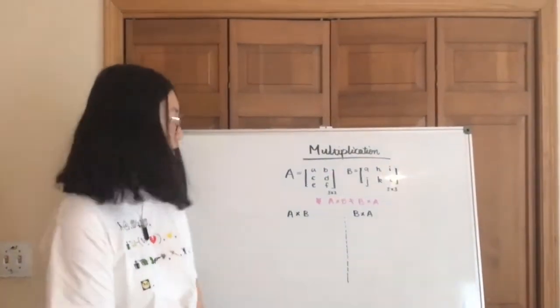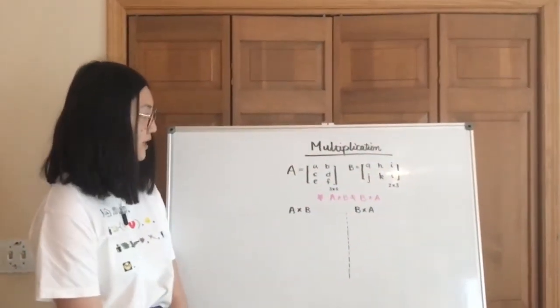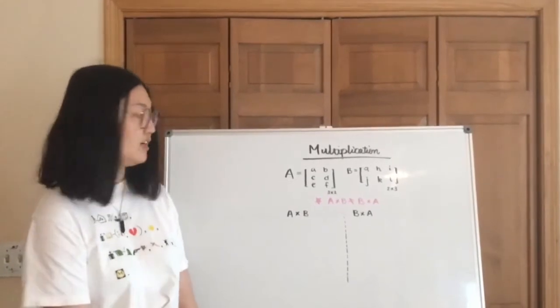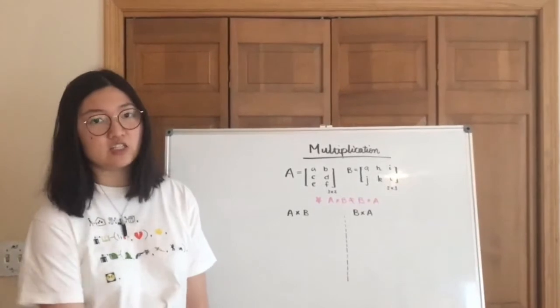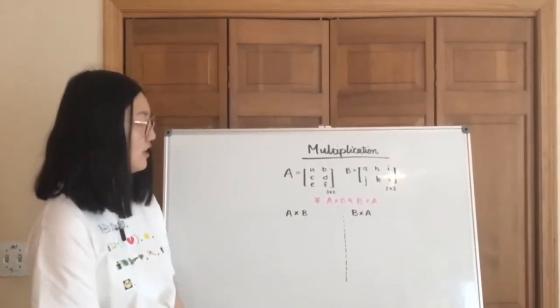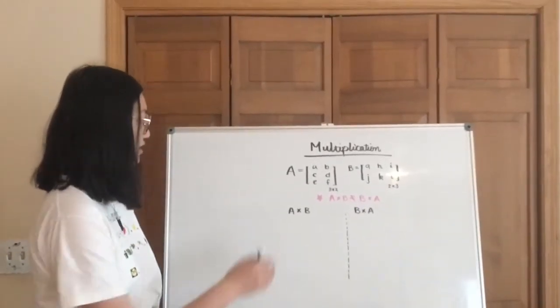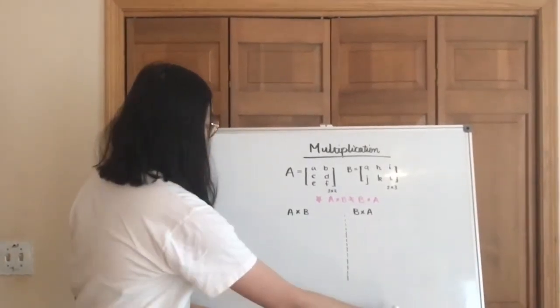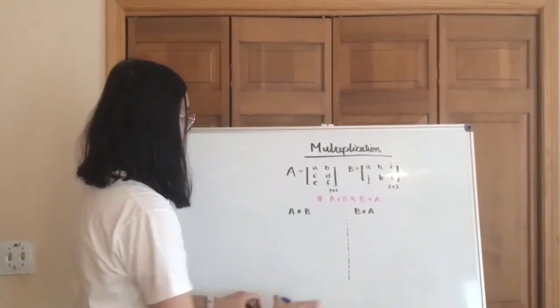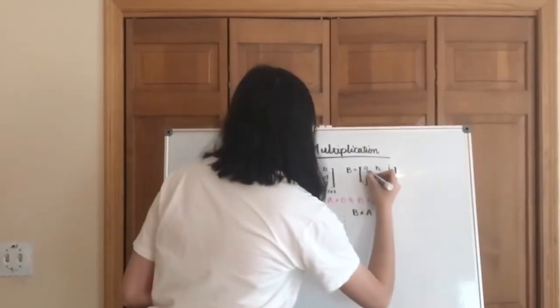Things get a little tricky when you try to multiply one matrix by another. So keep in mind that unlike your regular multiplication, multiplication in matrices are not commutative. As in, a multiplied by b is very different from b multiplied by a. And to show you that, I'm going to show you how to multiply in matrices.